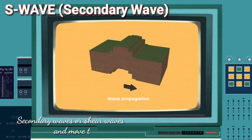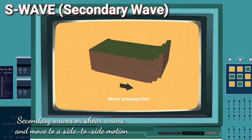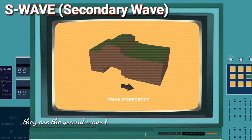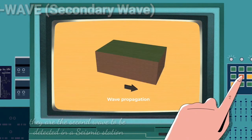S-wave or secondary waves or shear waves move in a side-to-side motion. They are the second wave to be detected in a seismic station.